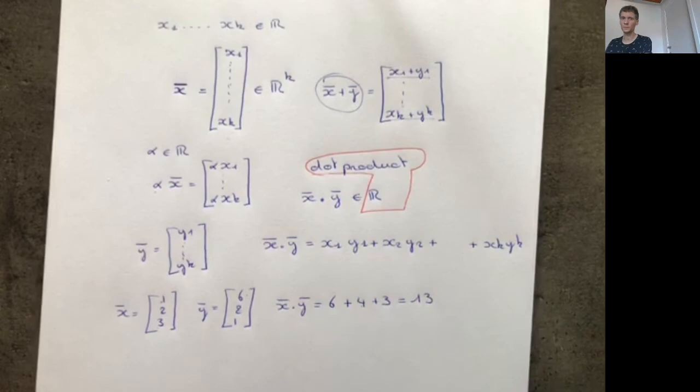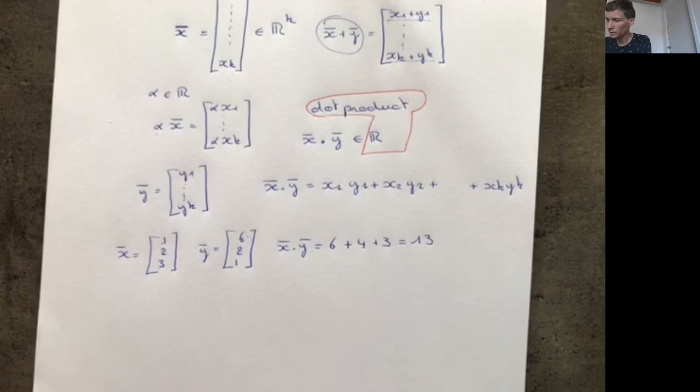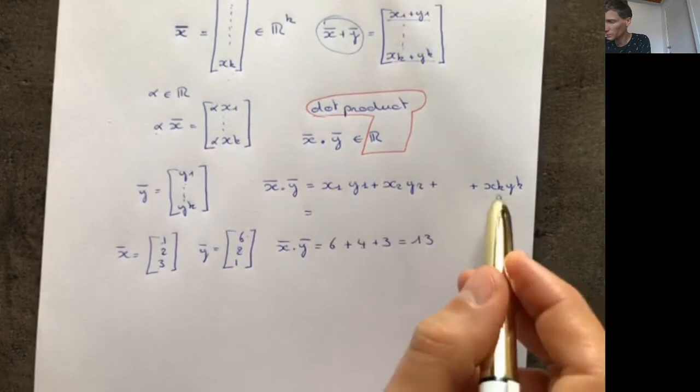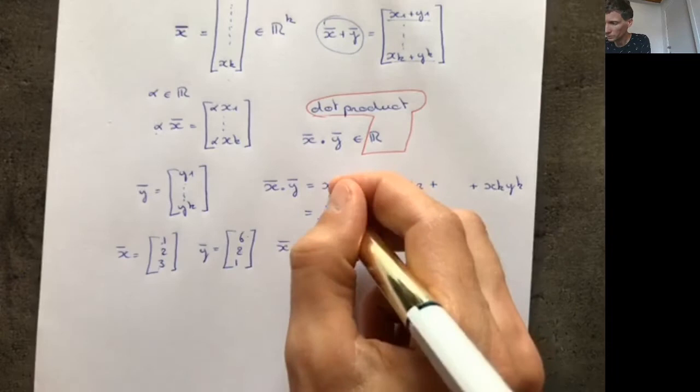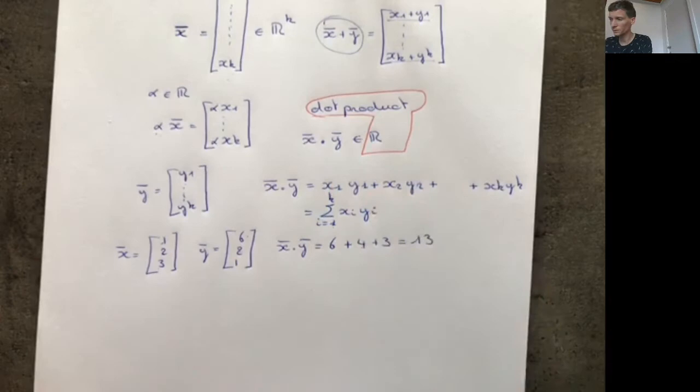Instead of writing out this entire sum, you can use summation notation. The dot product is the sum from i = 1 to k of xᵢyᵢ. This is just shorthand for the entire sum.